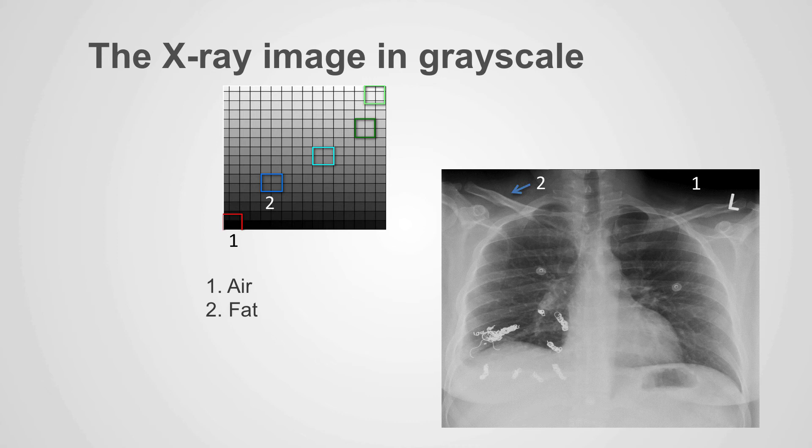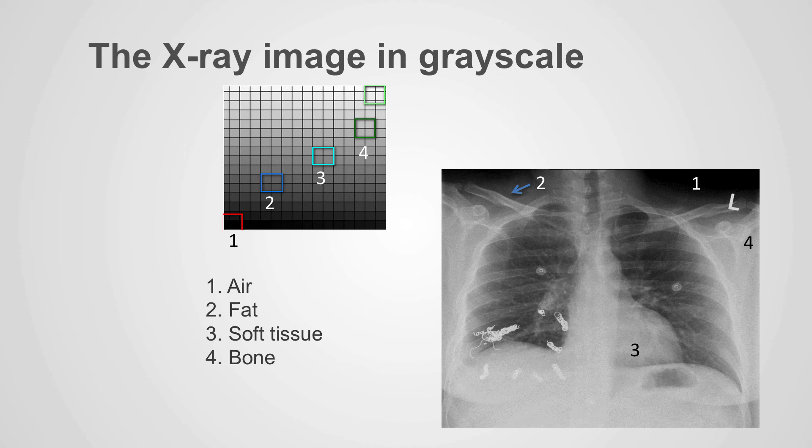The second density that we encounter on x-rays is a grayer density which represents fat and we can identify fat on an x-ray in the subcutaneous tissues. The next density that we identify is gray in grayscale and this represents the soft tissues. An example of this readily identified on x-ray is the heart. Very dense naturally occurring structure within the body is cortical bone and we can identify cortical bone readily by identifying easily seen anatomical structures such as the clavicles.